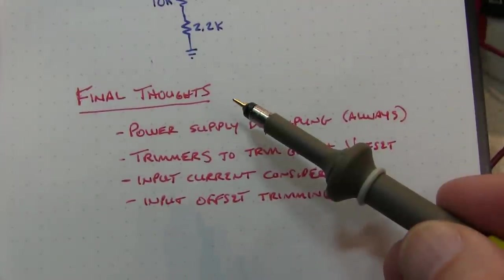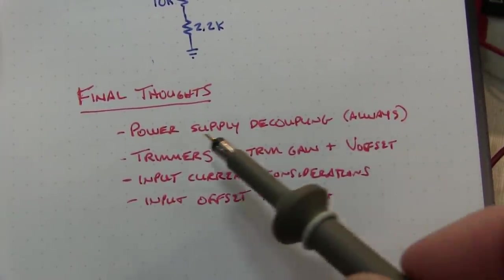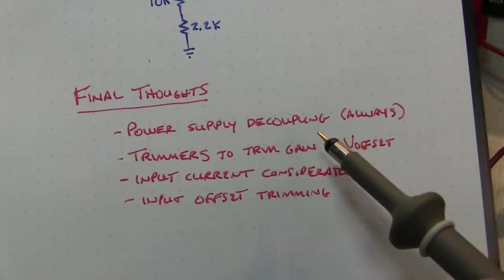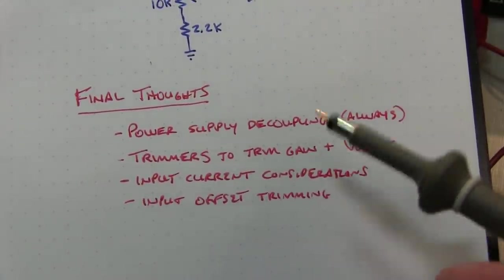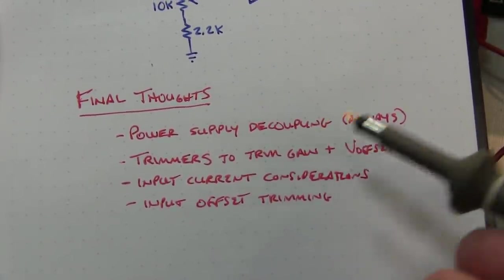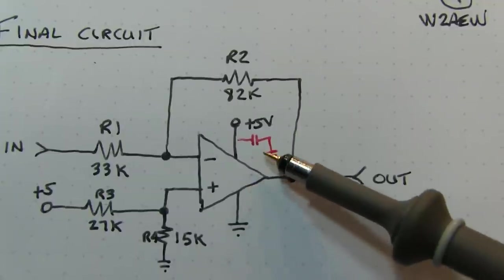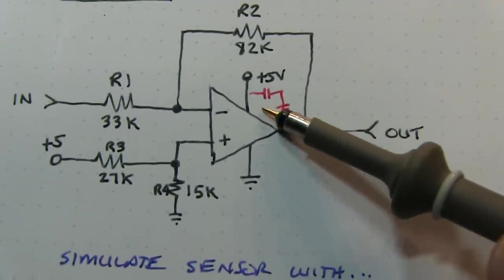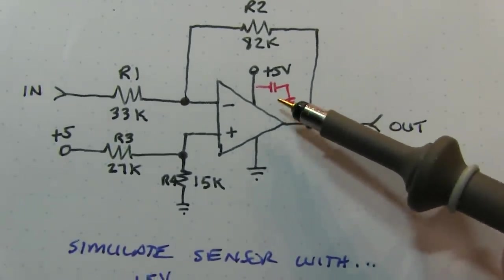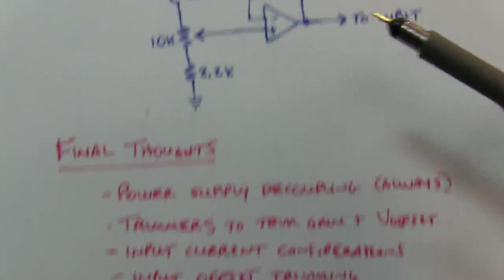A couple of final thoughts. Always a good idea to add some power supply decoupling capacitors. Not only at the power supply entry point to the board, maybe with some bulk electrolytic decoupling, but also right at the supply pins for the analog op amps, and you may use some lower value ceramic caps there to better filter high frequency noise.